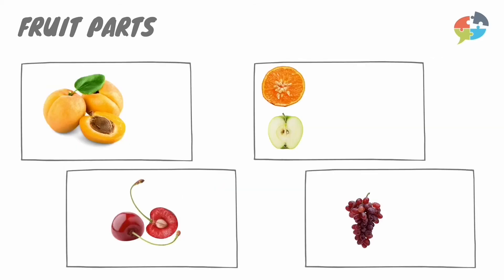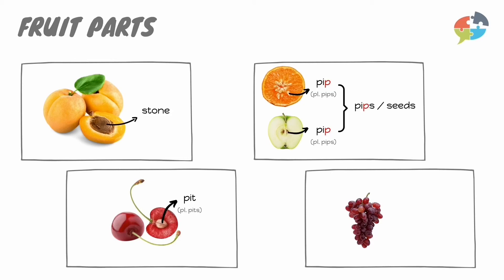For stone fruits such as apricots, the bit in the middle is called a stone. Smaller fruits such as cherries have pits inside them. And to make it even more confusing, in Britain we can also use the word pip for a seed inside certain fruits, such as oranges or apples. This means these are either called pips or seeds. Luckily, some fruits such as certain variants of grapes are seedless — this means that they contain no seeds at all.